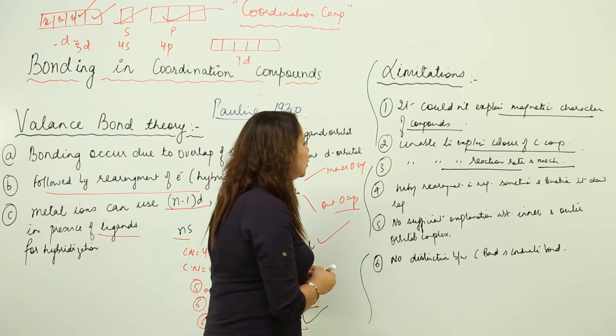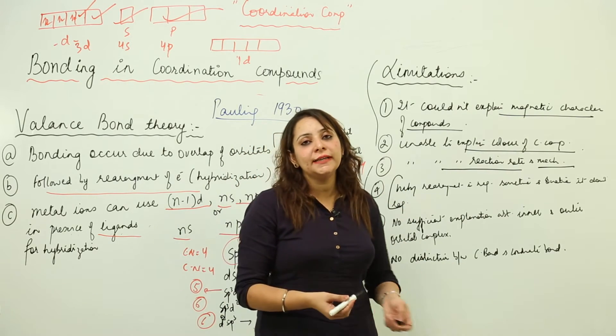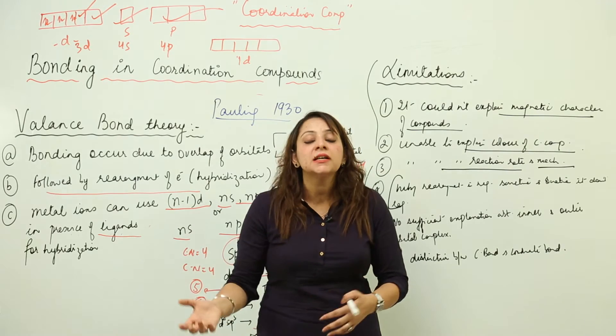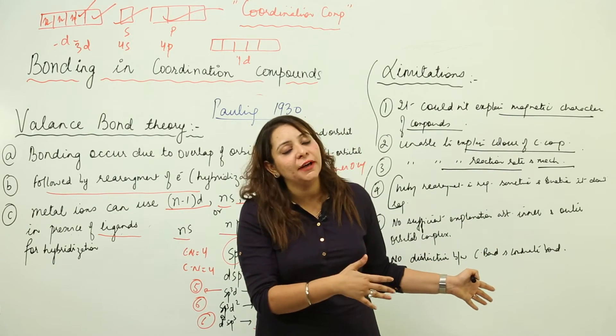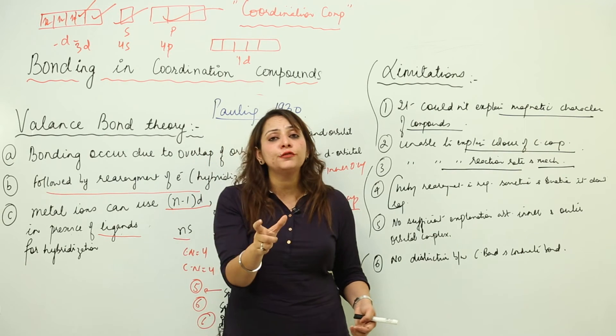You have seen that in certain cases when I took examples, somewhere the rearrangement of electrons was required and I was doing that, and somewhere I was just telling you to leave it as it is because it is diamagnetic or paramagnetic. So again, there is no definite kind of rule which can be followed in all cases. This is again a limitation.